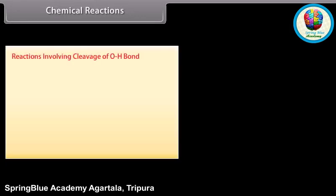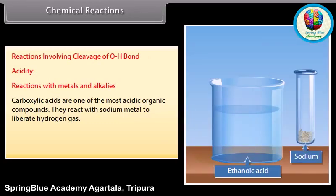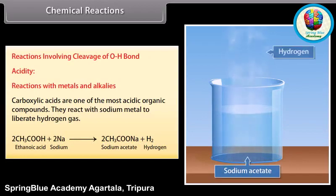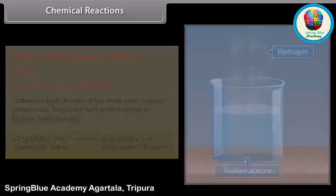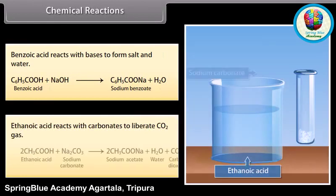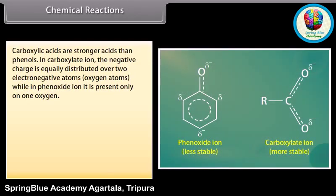Chemical reactions — reactions involving cleavage of the O–H bond. Acidity — reactions with metals and alkalies: carboxylic acids are one of the most acidic organic compounds. They react with sodium metal to liberate hydrogen gas. Sodium metal reacts with ethanoic acid to give sodium acetate and liberate hydrogen gas. Benzoic acid reacts with bases to form salt and water. Ethanoic acid reacts with carbonates to liberate carbon dioxide gas. Carboxylic acids are stronger acids than phenols.